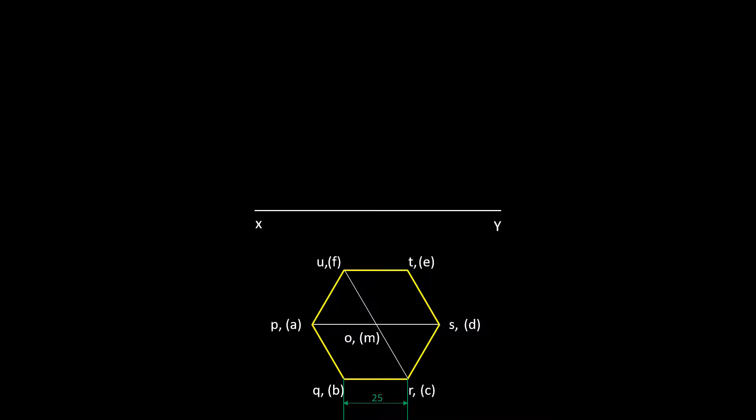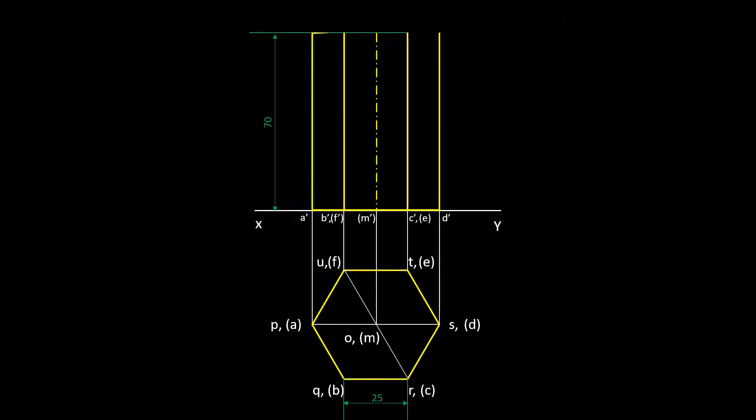Now let's go for the front view. Project all the corners. Locate the front view of the base on XY line, as we assume base is resting on HP. This is the front view of all vertical edges.